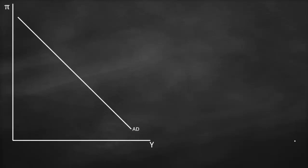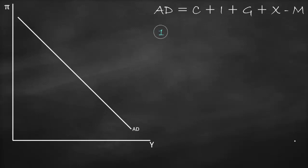We know that our aggregate demand is downward sloping. The aggregate demand formula, which is our GDP formula based on the expenditure approach, is consumption plus investment plus government spending plus exports minus imports, which we call net exports.